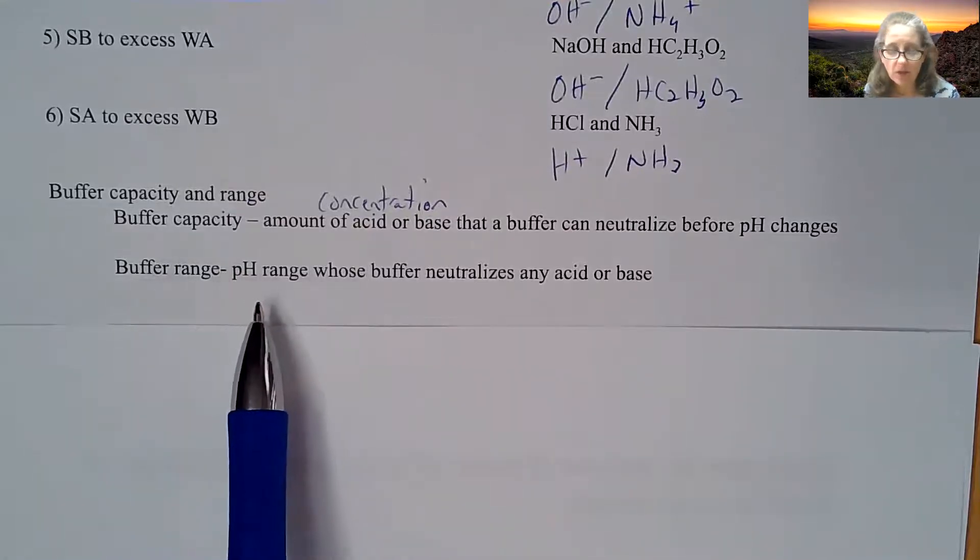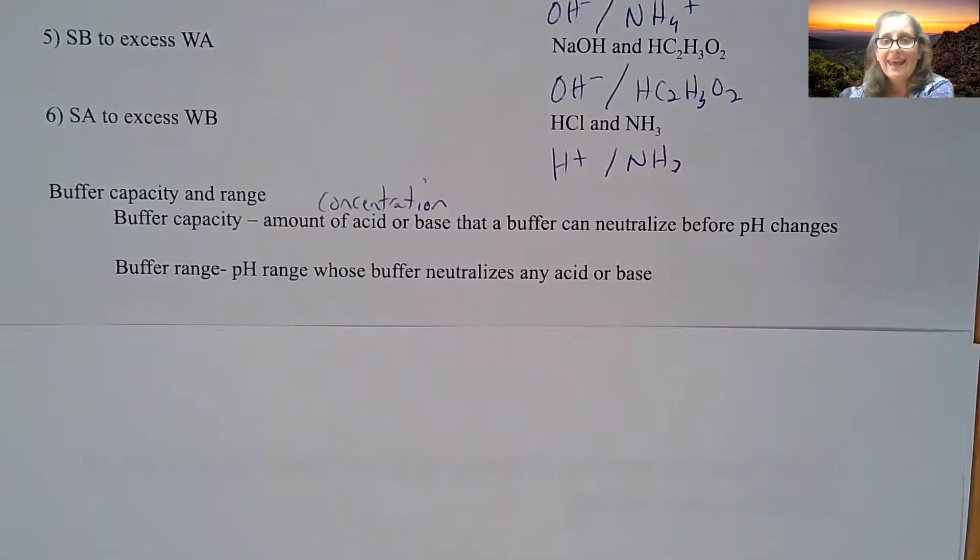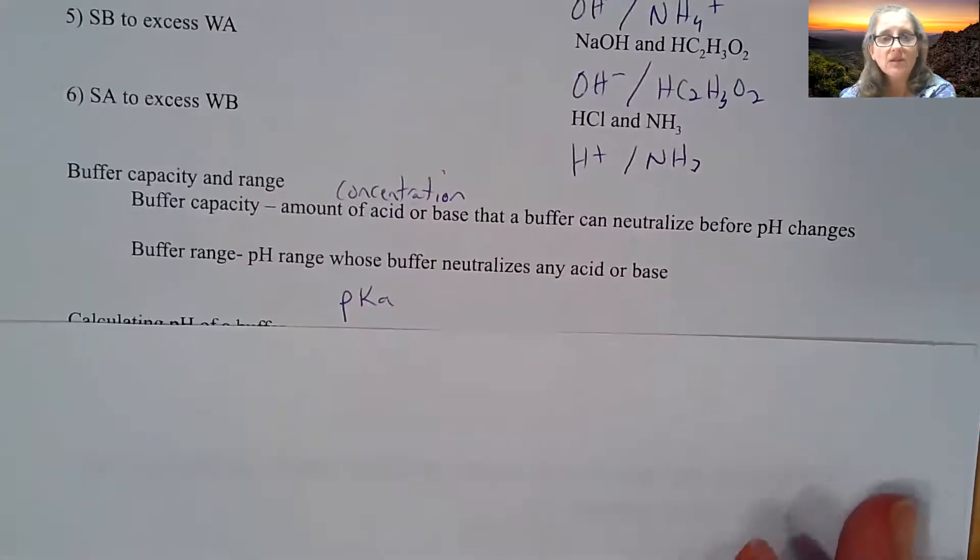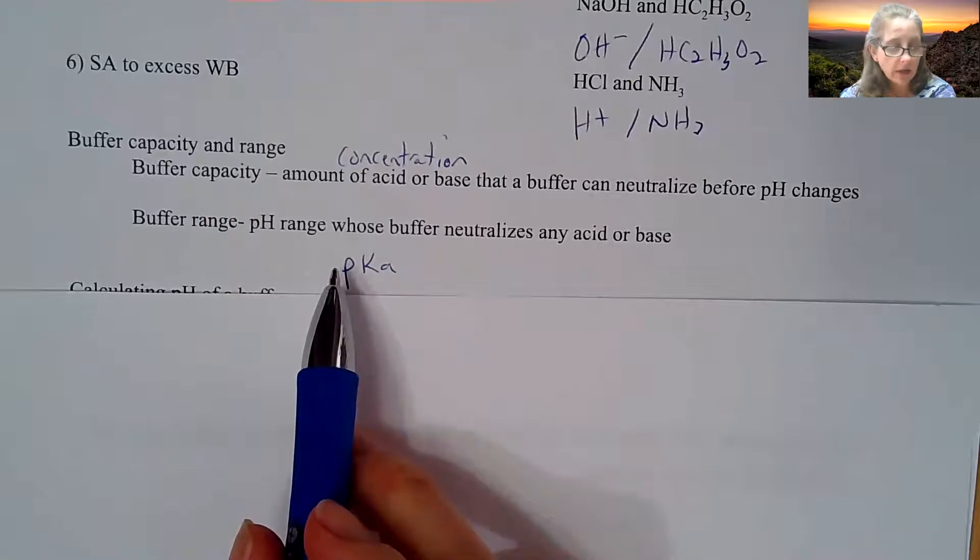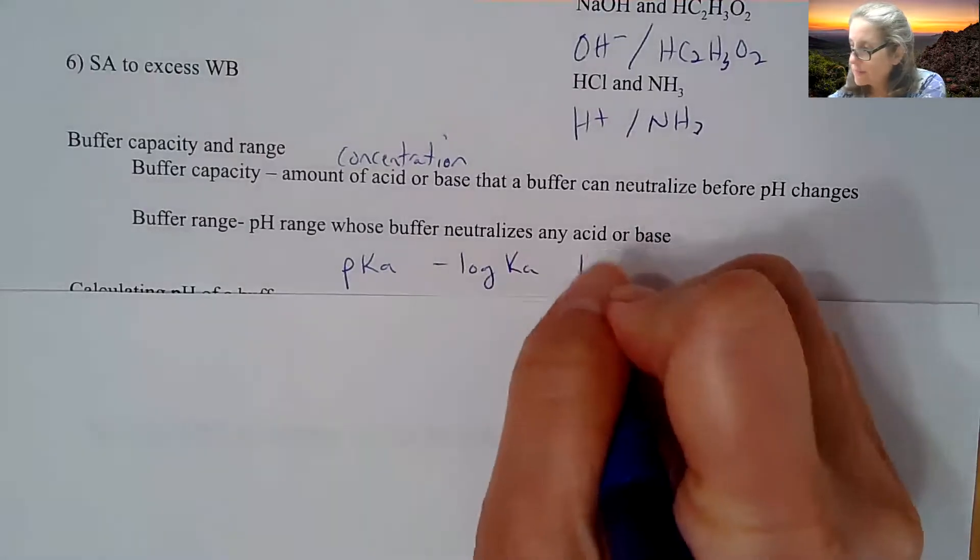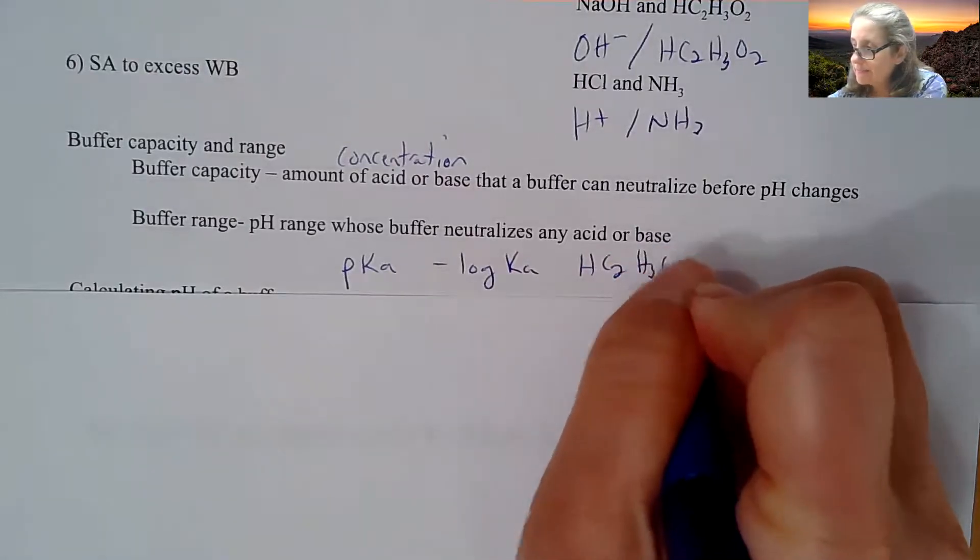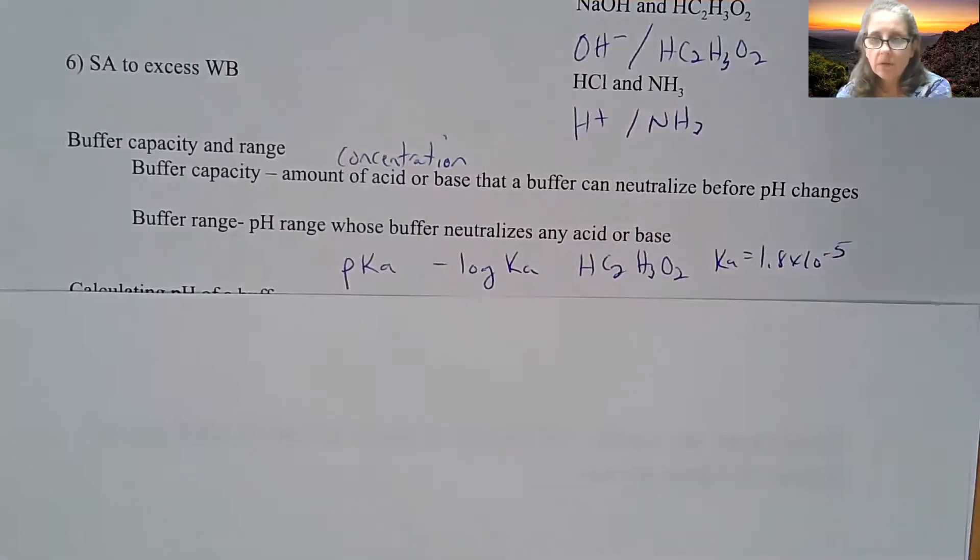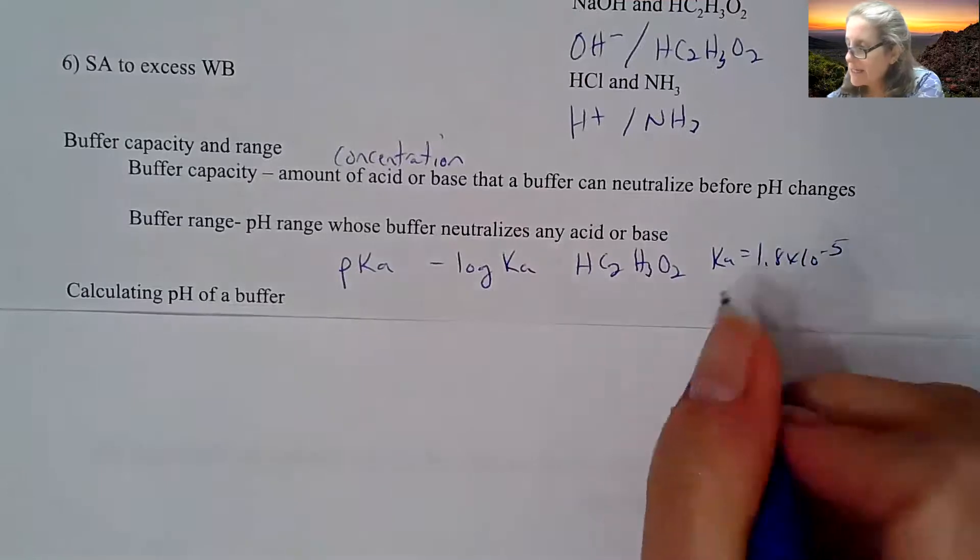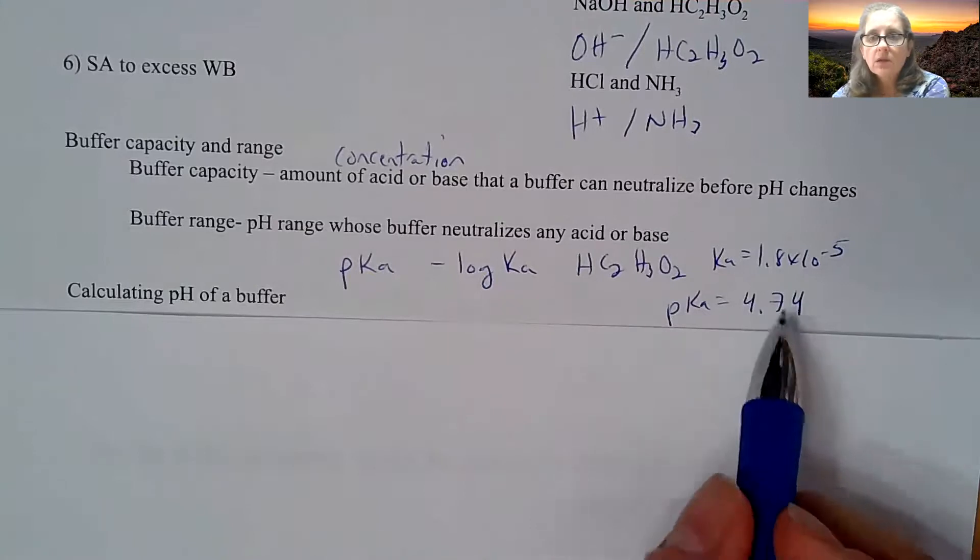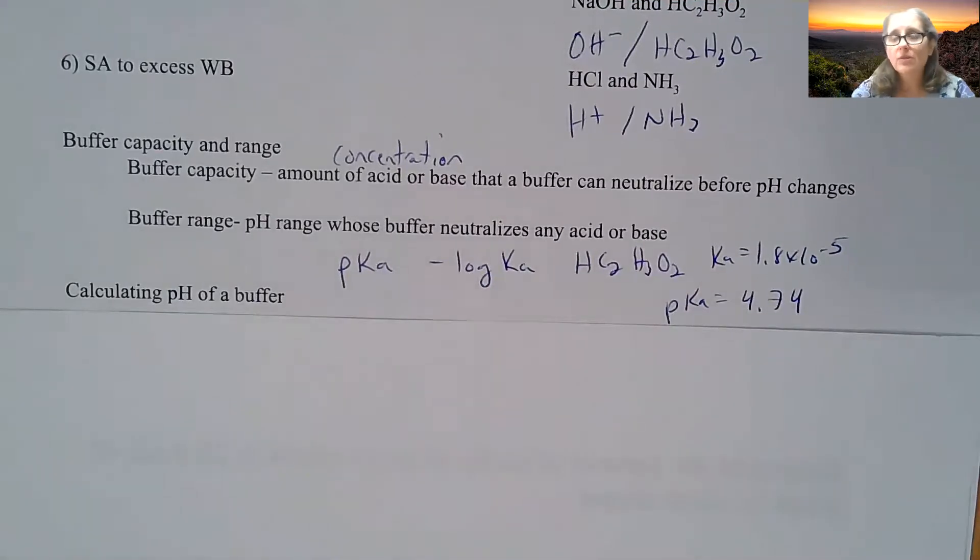Buffer range is what we call the pH range where the buffer neutralizes any acid or base. This is going to depend upon something called the pKa. Remember p stands for the negative log of your Ka value. For something like acetic acid, I have a Ka of 1.8 times 10 to the negative fifth. So what would my pKa be? It's going to be 4.74. So around that range is going to be where that particular buffer behaves the best.